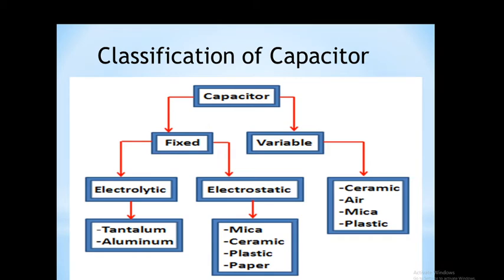Now let's see the specification of the capacitor, starting with its classification. Capacitor is mainly classified on the basis of value as a fixed capacitor and variable capacitor. For the fixed capacitor, the value is fixed with no change. For the variable capacitor, there is variation in the capacitance value. Fixed capacitor is further classified into electrolytic capacitor and electrostatic capacitor.